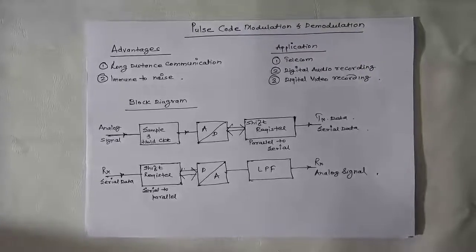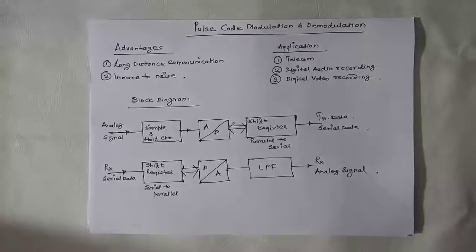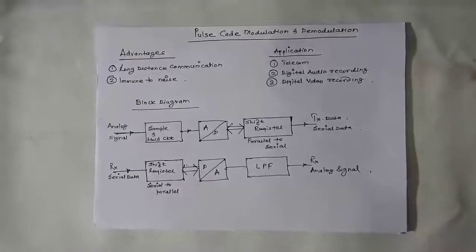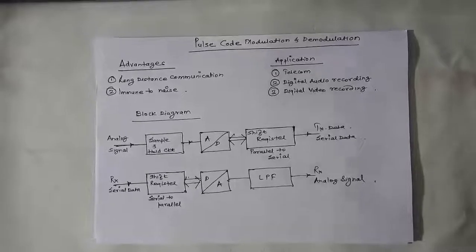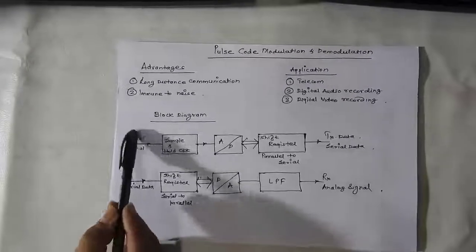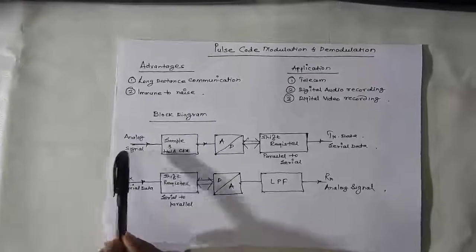Let us see the block diagram. When we perform the experiments, we'll see how these different blocks are important. First is the analog signal coming from a microphone or any source.